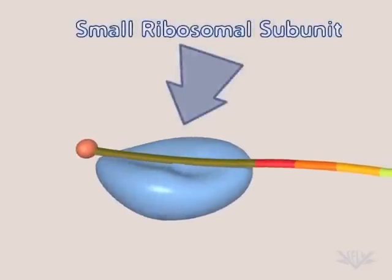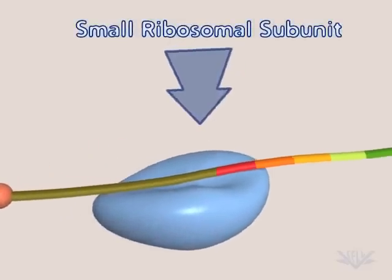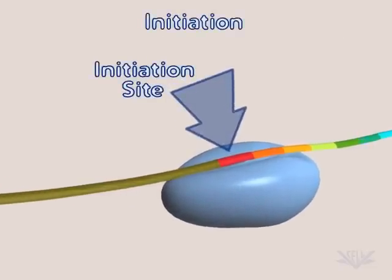Translation initiation begins when the small subunit of the ribosome attaches to the cap and moves to the translation initiation site.